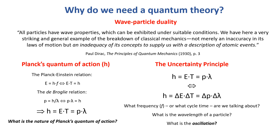We should also remind ourselves why we need a quantum theory at all — why classical mechanics doesn't work. The main reason is wave-particle duality. As Dirac observed: photons, electrons, all particles have wave properties which can be exhibited under suitable conditions. It's a very striking example of the breakdown of classical mechanics — not merely an inaccuracy in its laws of motion, but an inadequacy of its concepts to supply us with a description of atomic or subatomic events.